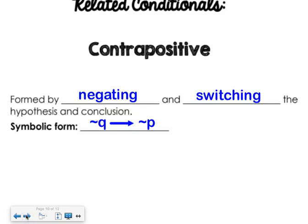And then our last one, the contrapositive, does both. It negates it and flips it. So not Q implies not P.